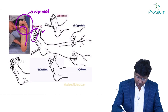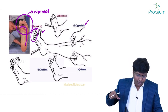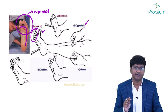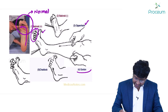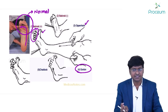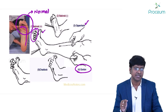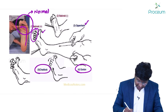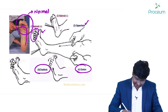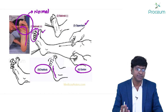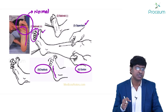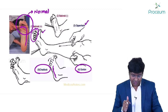Other methods of eliciting the plantar reflex include: the Oppenheim sign — rubbing over the shin of the tibia; Gordon's method — squeezing the calf muscles; and the Chaddock method — applying a blunt stimulus over the lateral dorsum of the foot. In all cases, upper motor neuron lesion produces extension of the great toe and fanning of the other toes.